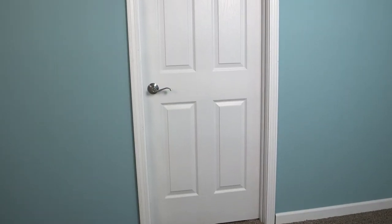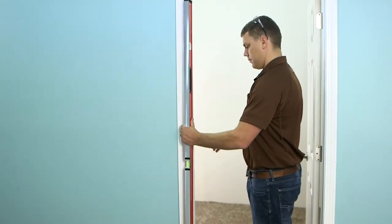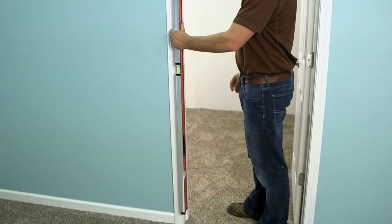Doors protruding towards the interior of the room typically have one of two potential problems: the door installation could be out of plumb, or the door itself could be warped.